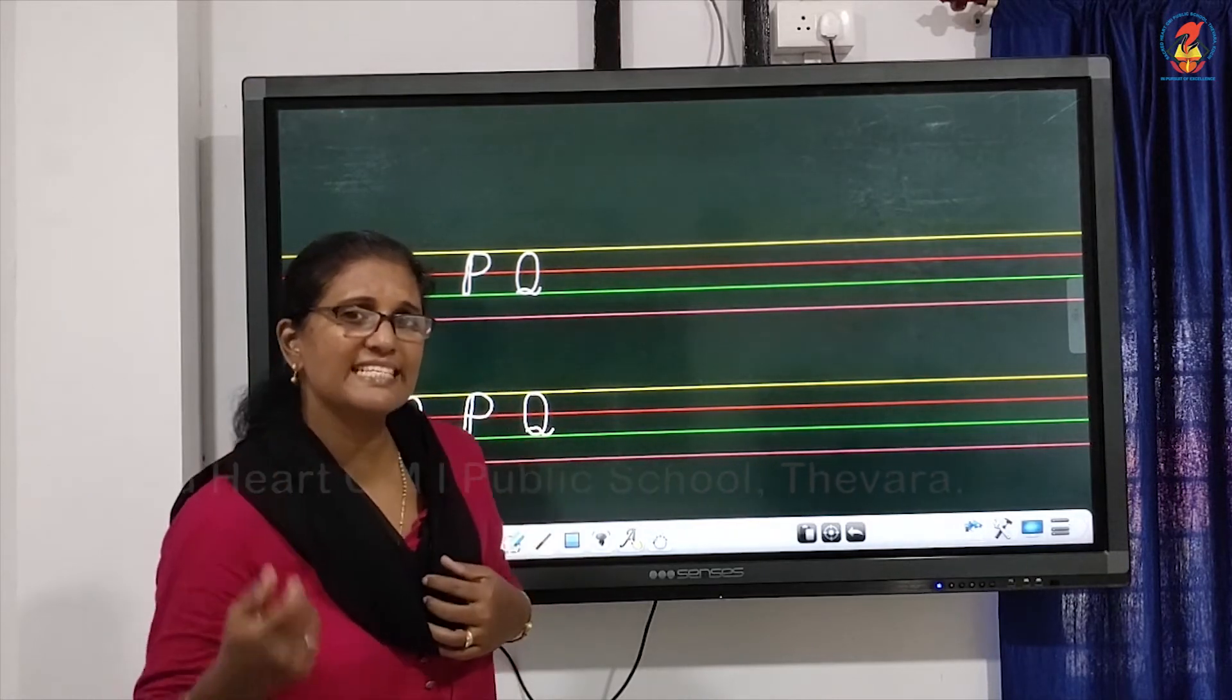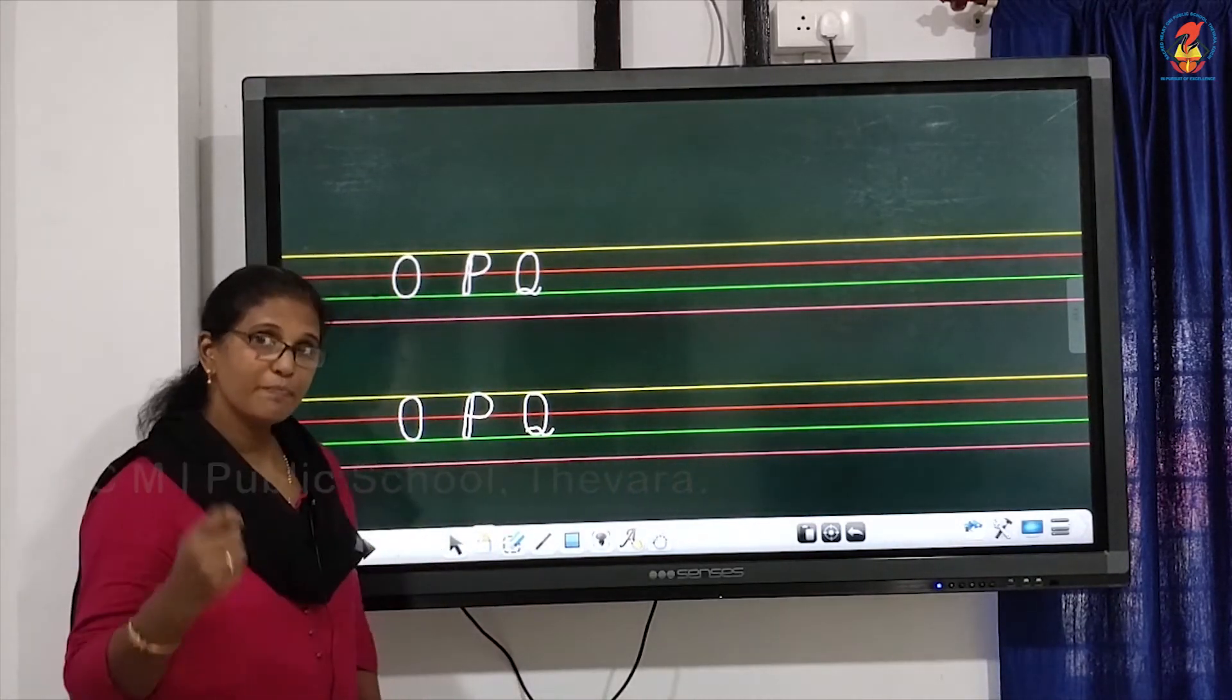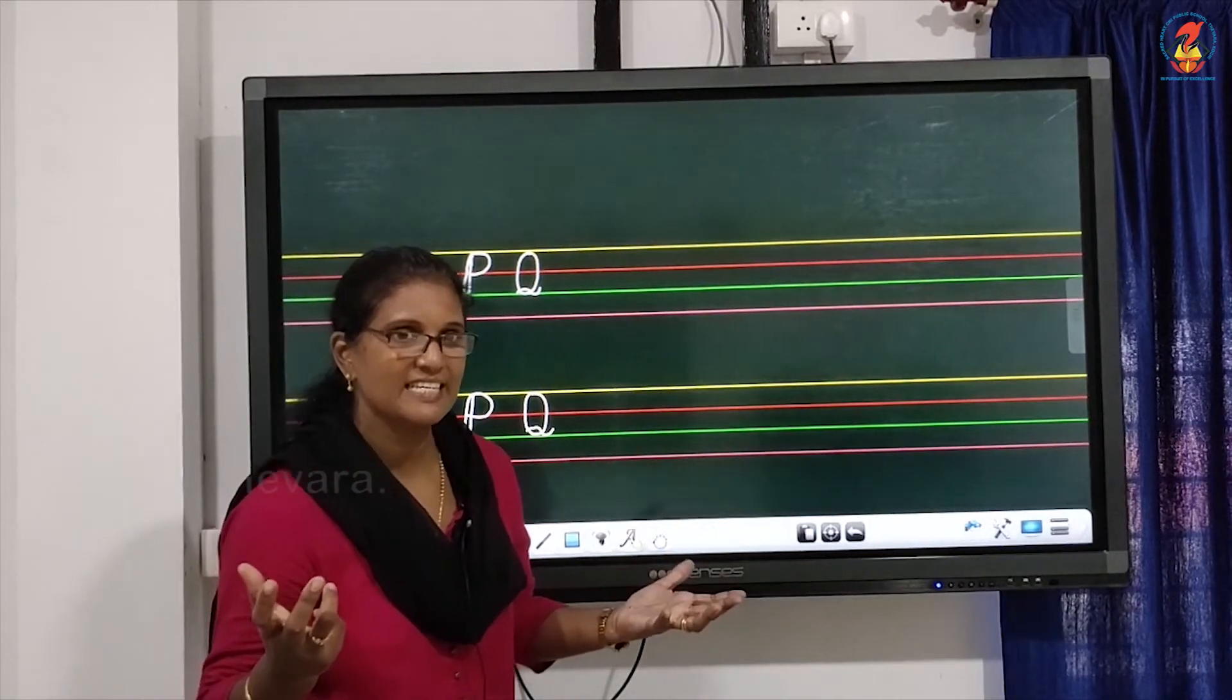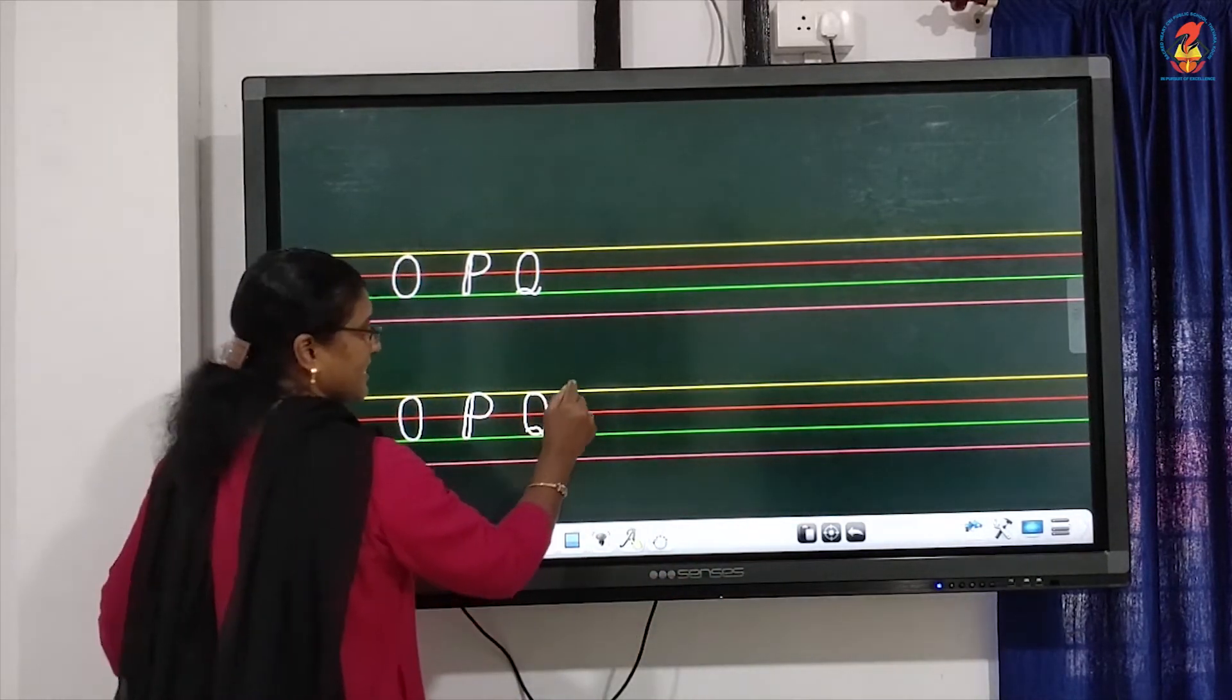After Q, can you guess what's the next letter? Yes, O, P, Q. Right, it is R. R for rat. Rat to knee. Yes, correct.